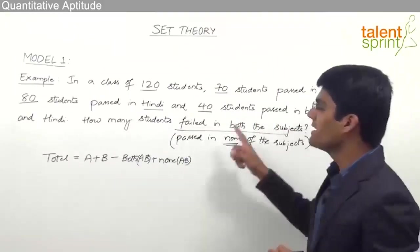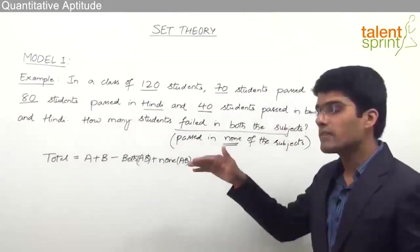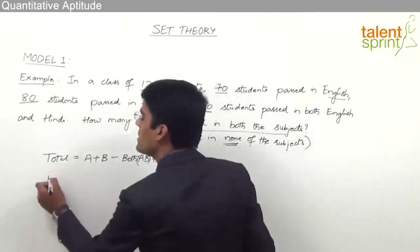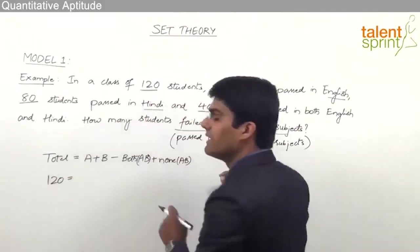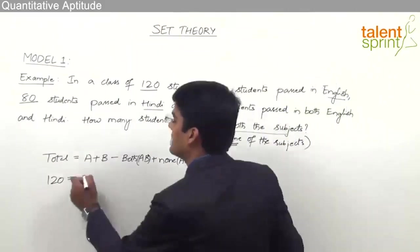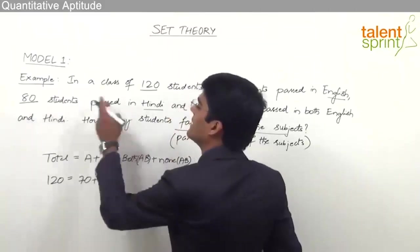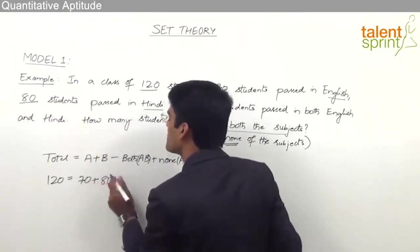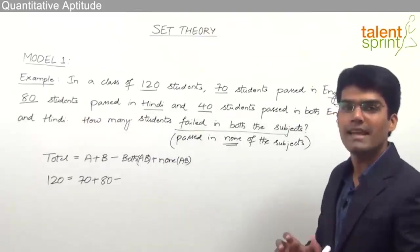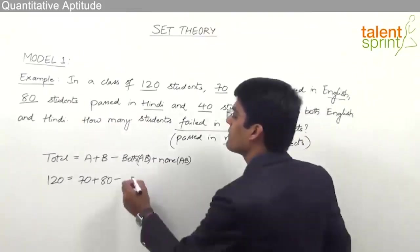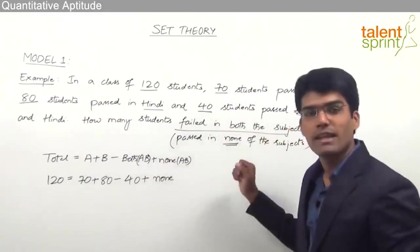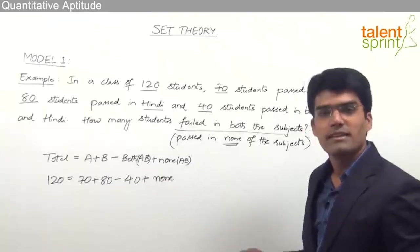Let us take A as English and B as Hindi and substitute the values. Total number of students is 120. So, 120 equals A, that is students passed in English given as 70, plus B which is students passed in Hindi given as 80, minus both AB which is students passed in both Hindi and English given as 40, plus none — students who passed in none of the subjects, which has to be calculated.